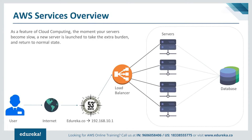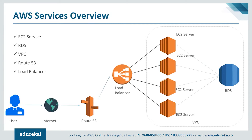Now let's look at how these components map from the AWS perspective. The DNS server we discussed is called Route 53. The web servers are EC2 servers. The relational database is RDS. The network in which these components are enclosed is VPC. The load balancer is again called Load Balancer. And the property which increases or lowers the number of servers according to traffic is Auto Scaling. These are some of the basic services offered by AWS.